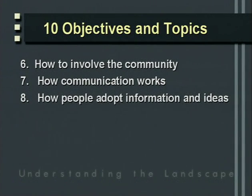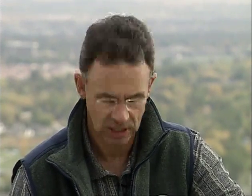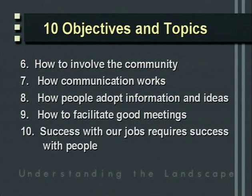Number eight, how do people adopt information? People don't always accept information and actions at the same rate — what thought process do they go through to make decisions? Number nine, how do we make good meetings? We've all been to meetings that failed. And number ten, we'll talk about how success with our job necessitates success with working with people. We can't think about natural or agricultural landscapes alone — we have to think about the people, why they do what they do, and how we can help them do it better.